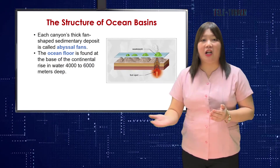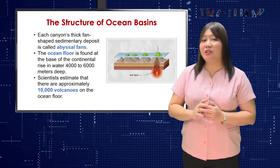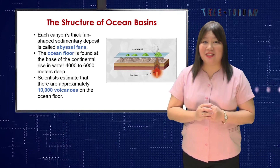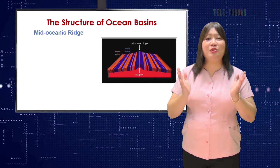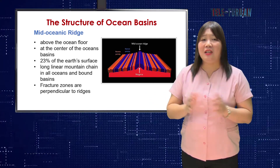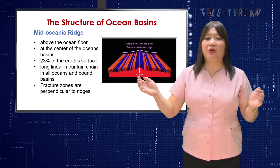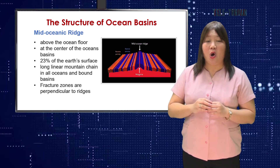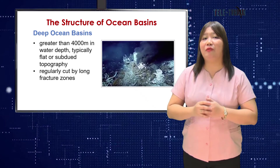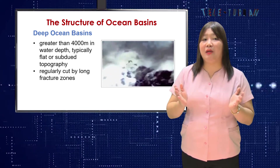The ocean floor is found at the base of the continental rise in water 4,000 to 6,000 meters deep. Numerous volcanoes populate the floor of the ocean basins, and scientists estimate there are approximately 10,000 volcanoes on the ocean floor. The mid-ocean ridge is normally found rising above the ocean floor at the center of the ocean basins, constituting 20% of the Earth's surface. Mid-ocean ridges are long, linear mountain chains which occur in all oceans and ocean basins. Fracture zones are perpendicular to ridges, and deep ocean basins greater than 4,000 meters in water depth are typically flat and regularly capped by long fracture zones.